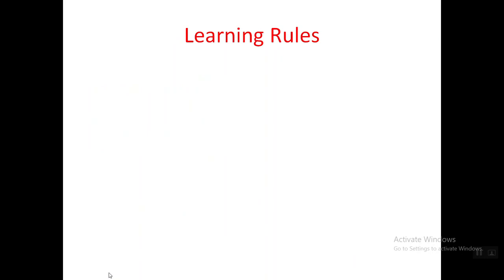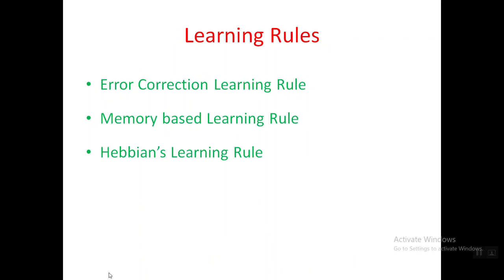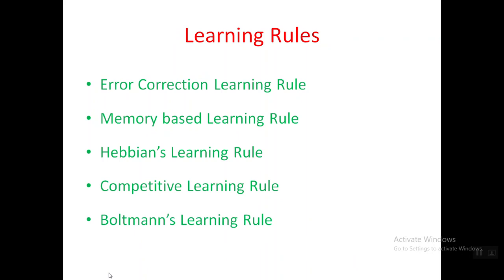What are the learning rules available? The learning rules available are: error correction learning, memory-based learning, Hebbian learning, competitive learning, and Boltzmann learning. Each of these learning rules is suitable for a particular task. If a particular task is given, you need to identify which learning rule to use, and only then will you start building your algorithm based on that learning rule.